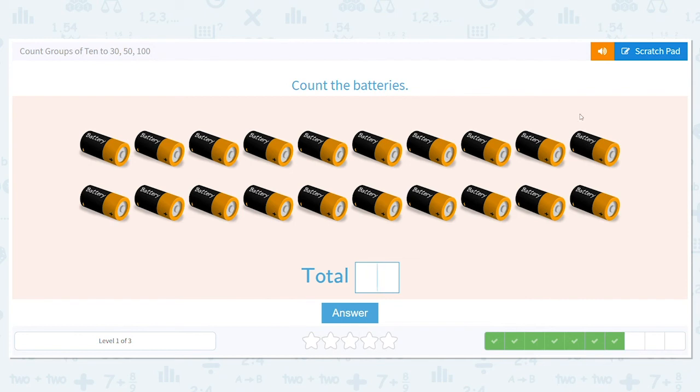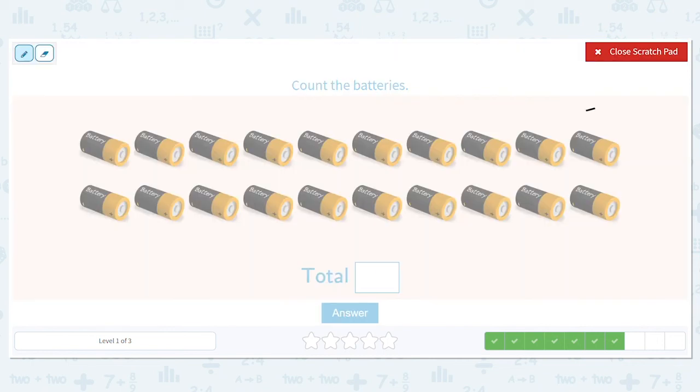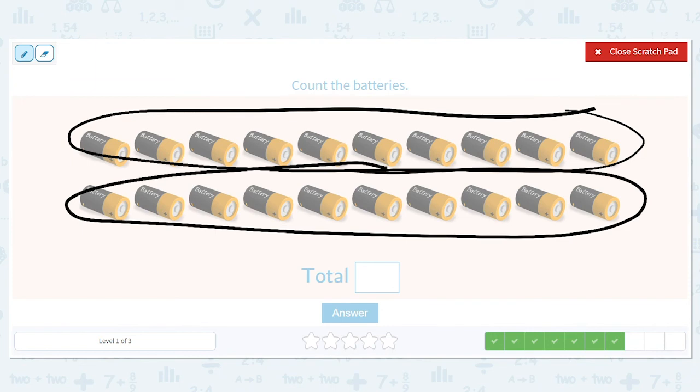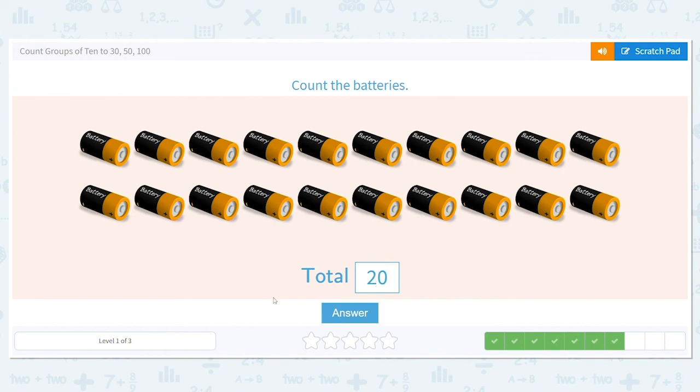Now before we get the total, I want you to try to take a guess as to the total number of batteries there are. I'm going to circle my first row while you're thinking of it. Maybe you have your answer. And then my next row of 10. So how many batteries do we have in all? 10 plus 10 equals? I hope you said 20 because the correct answer is 20.